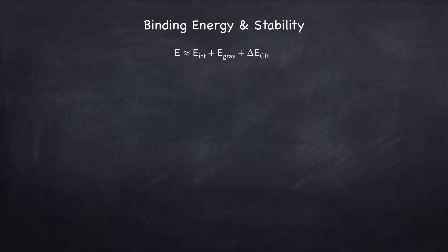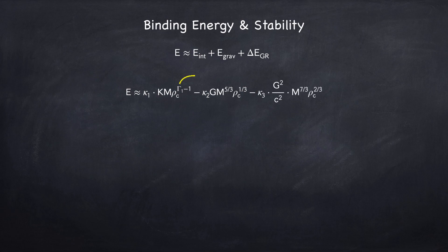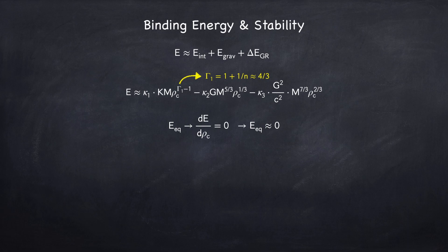Now let's look at the total binding energy and stability. The total energy is the Newtonian energy plus the GR correction, which we can plug in. We already found the Newtonian energy in the previous video, and γ₁ is going to be very close to 4/3 since we only care about radiation-dominated environments. To find the equilibrium energy, just as in Stellar Physics 3E, we minimize the energy. We know it will be very close to zero, because the Newtonian energy is zero, plus a small correction due to GR.